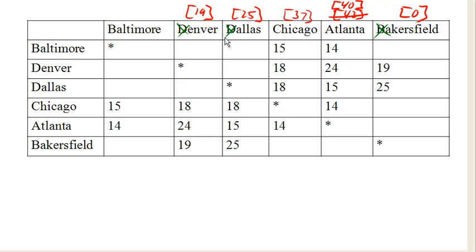Our next shortest is Chicago. Marking Chicago as current, I could go to Baltimore — 37 plus 15 there would give me a time of 52 to Baltimore routing through Chicago. We could also check 37 plus 18, but that's going to be much bigger than 19 for Denver, and 37 plus 18 to get to Dallas is definitely bigger than 25, and 37 plus 14 is going to be bigger than 40 for Atlanta. So we're completely done updating for Chicago.